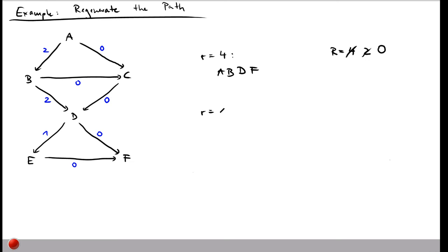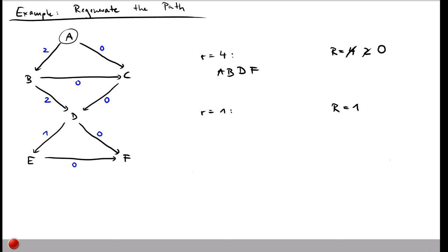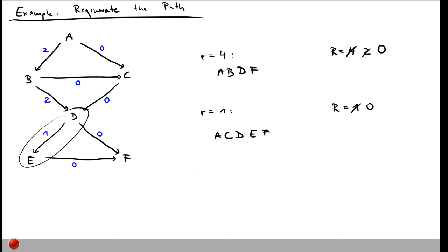For encoding 1: initialize uppercase R = 1. At A, we cannot go to B (cost 2 > 1), so we go to C (cost 0). At C there's only one option: go to D. At D, we can take the edge to E (cost 1 ≤ 1), subtract 1, leaving R = 0. From E, the only way out is to F. So encoding 1 corresponds to path A→C→D→E→F.